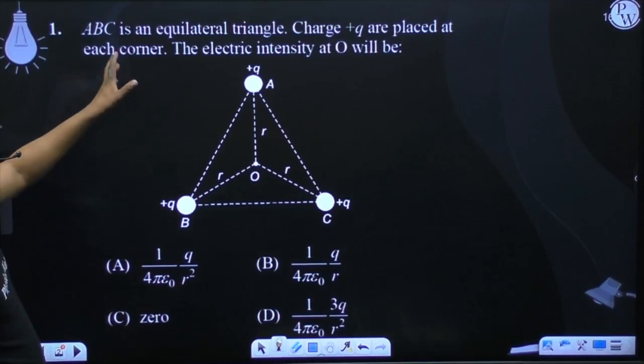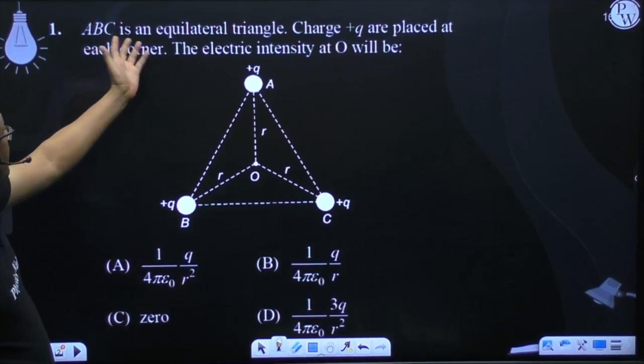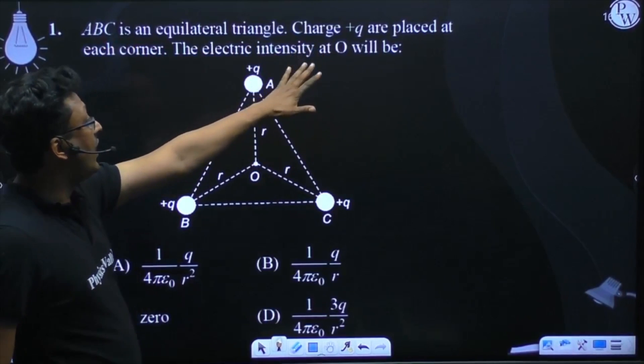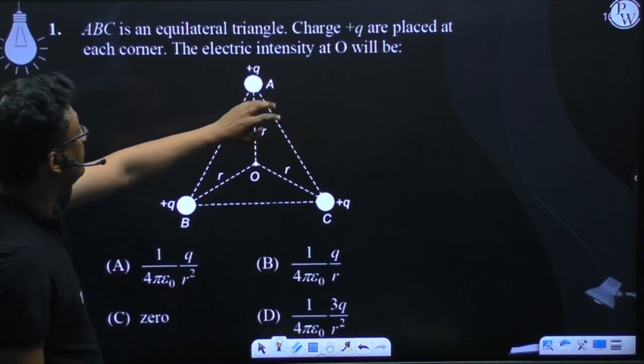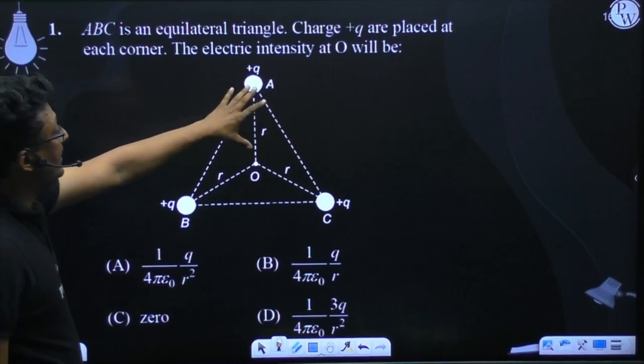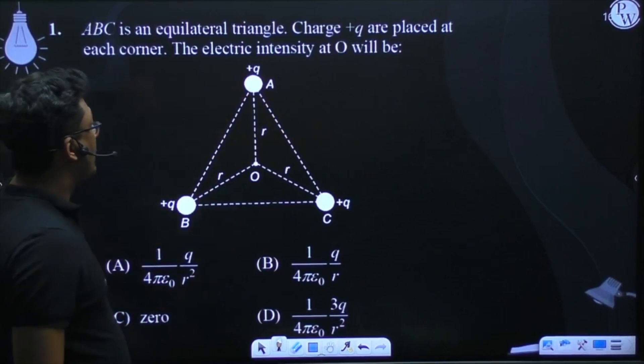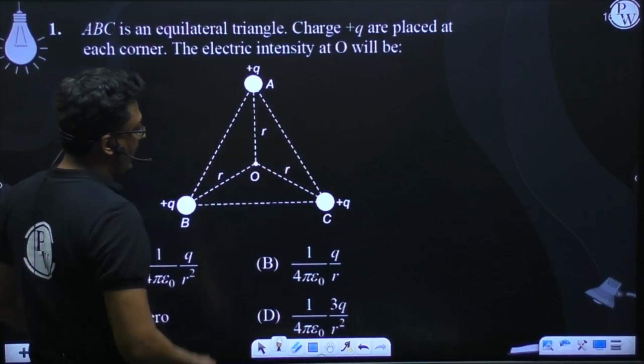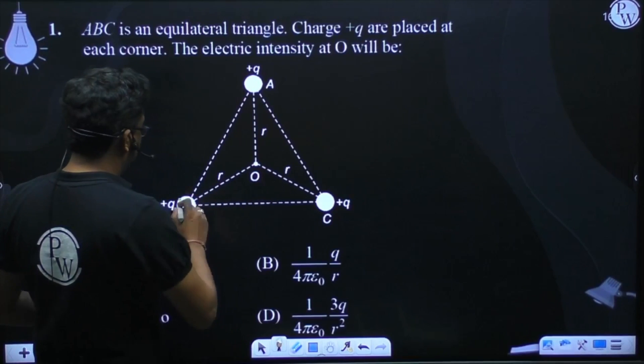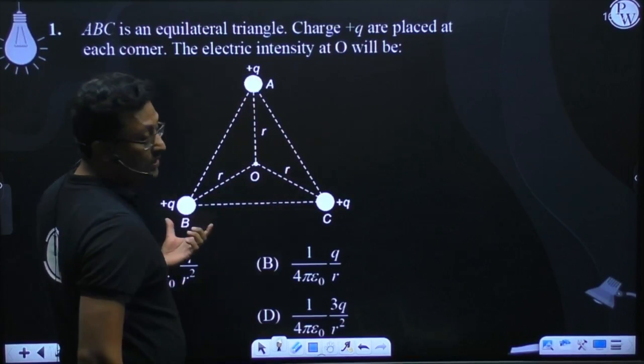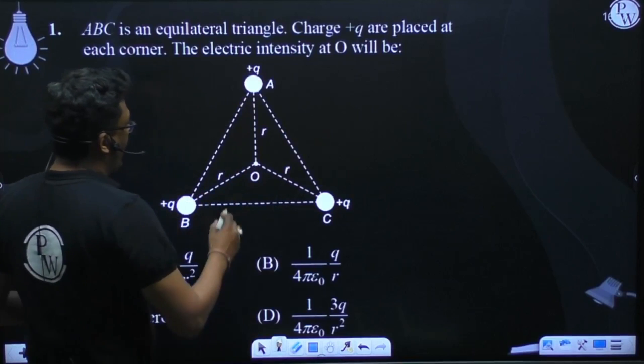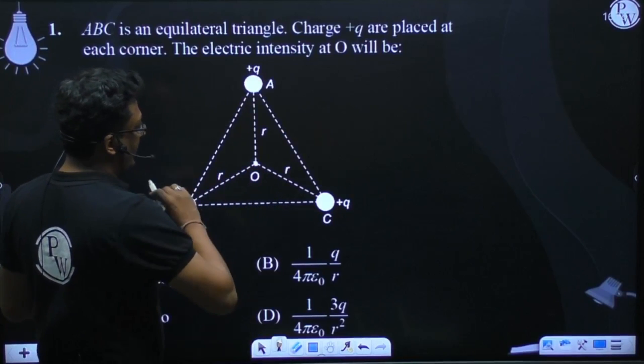Question 1 says that triangle ABC is an equilateral triangle. Charge +q is placed at each corner. The electric field intensity at O will be? This given triangle is equilateral and all the charges are equal in magnitude. We have to find the electric field intensity at O.